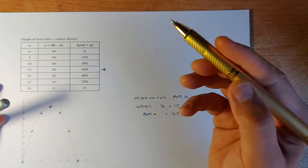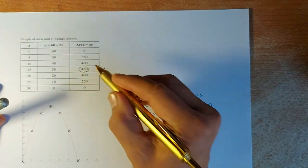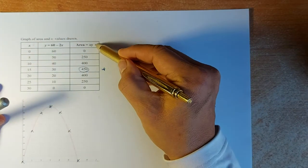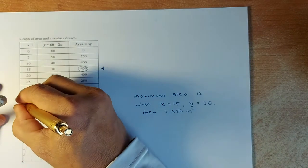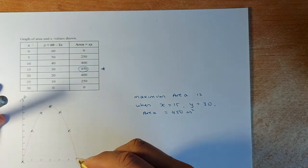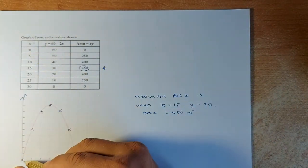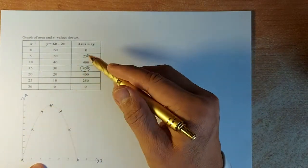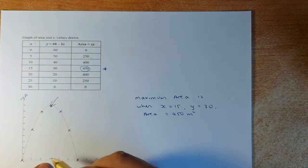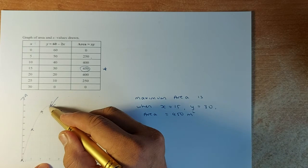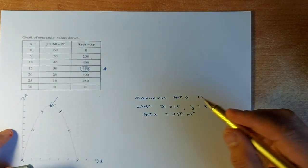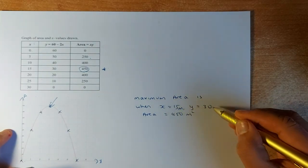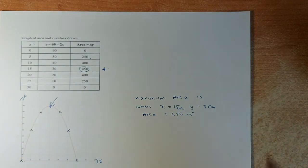Once we have done that, we found the largest area is 450 when x is 15 and y is 30. Similarly, if we draw the graph of x versus area, when x is 0, area is 0. When x is 5, area is 250. And we found that the highest point is when x is 15 and the area is 450 and y is 30. So the maximum area is 450 square meters when x is 15 and y is 30. If you can do that, that will give you an excellence in this paper.